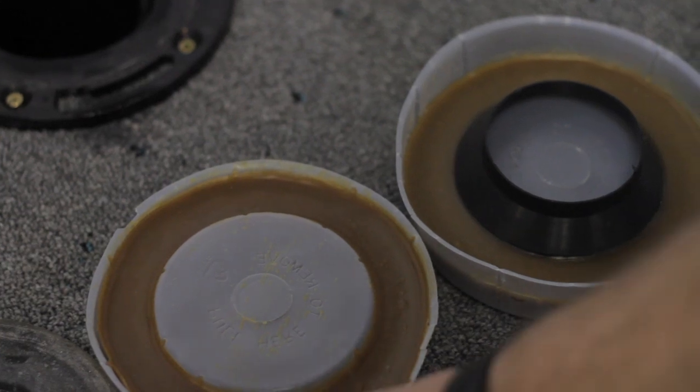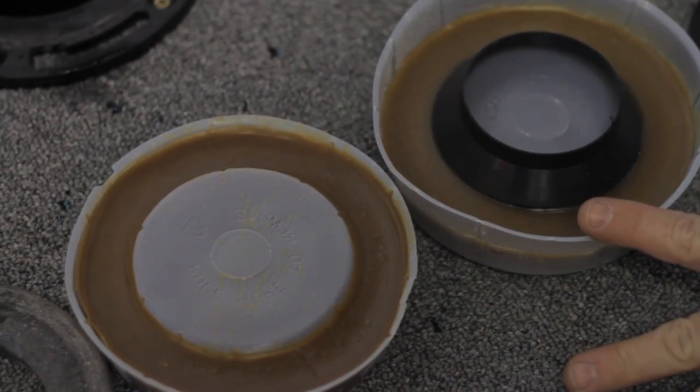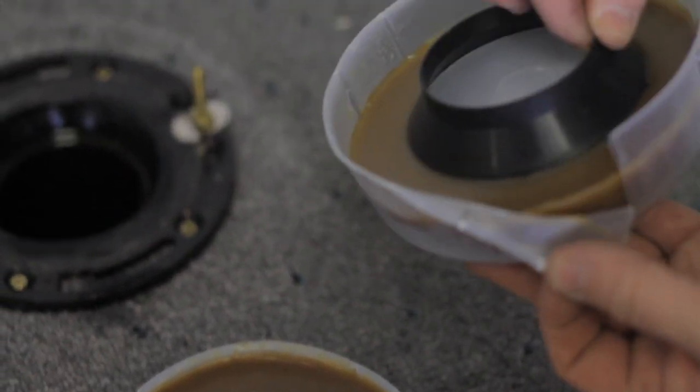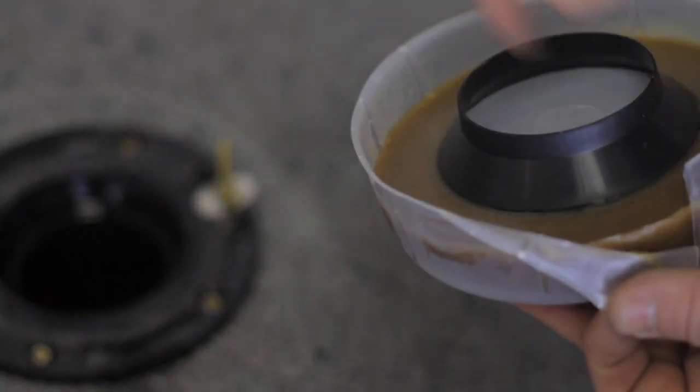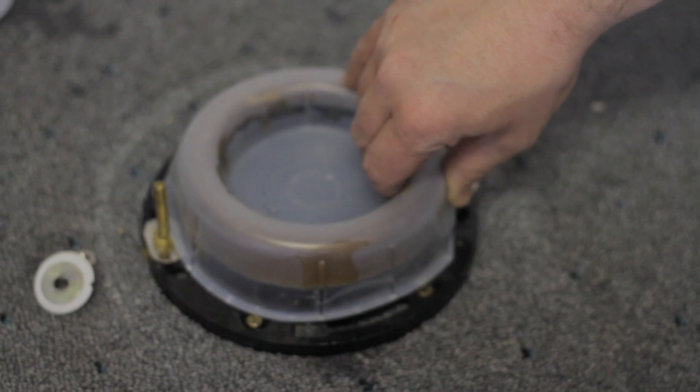A couple of different seals: you have a urethane or a rubber seal, a couple of different kinds of wax seals. On your wax seals you'll just pull the plastic off, make sure the ones with the horn or the cone fit upside down on your flange.